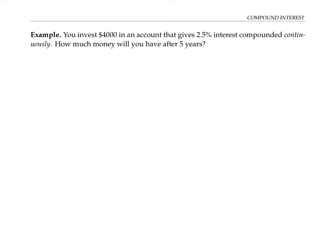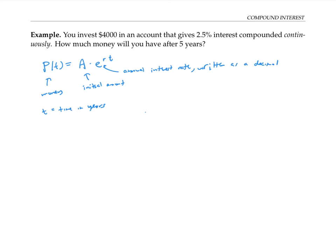There's one more type of compound interest: interest compounded continuously. You can think of continuous compounding as the limit of compounding more and more frequently — 10 times a year, 100 times a year, 1,000 times a year, a million times a year — and in the limit you get continuous compounding. The formula for continuous compounding is p(t) equals A times e to the rt, where p(t) is the amount of money, t is the time in years, A is the initial amount, and r is the annual interest rate as a decimal. E represents Euler's constant, which is about 2.718.